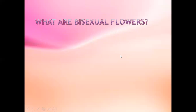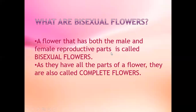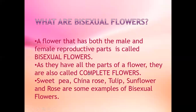What are bisexual flowers? A flower that has both the male and female reproductive parts is called a bisexual flower. As they have all the parts of a flower, they are also called complete flowers. Sweet pea, rose, tulip, and sunflower are some examples of bisexual flowers.